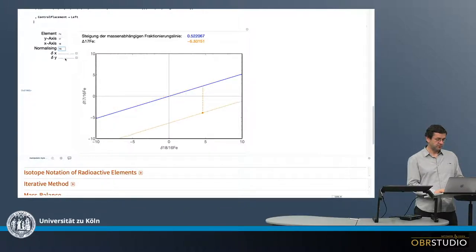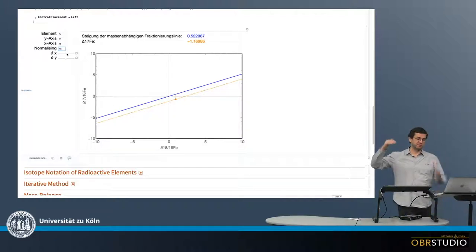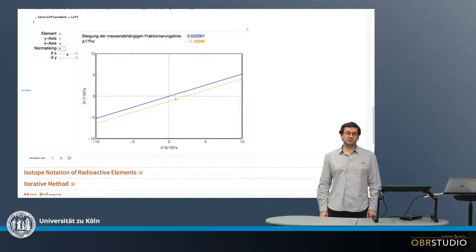This is exactly the same. This is for y, so basically 17-16. This is if I change the 18-16. It's always plotting along a slope parallel to the TFL. So this is the capital delta notation in a three isotope plot.